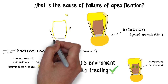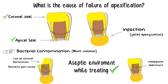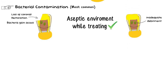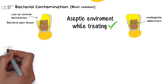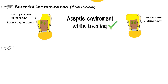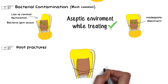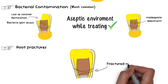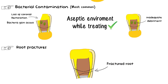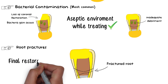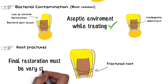Just like a normal root canal treatment, establishment of apical and coronal seals are one of the most crucial factors for the long-term success of apexification. Another cause of failure is root fractures. As mentioned, the root of the tooth is not fully developed and is not reinforced enough to withstand intense masticatory loads. Hence, final restorations should be made very strong and capable of resisting high masticatory loads during the life of the tooth.